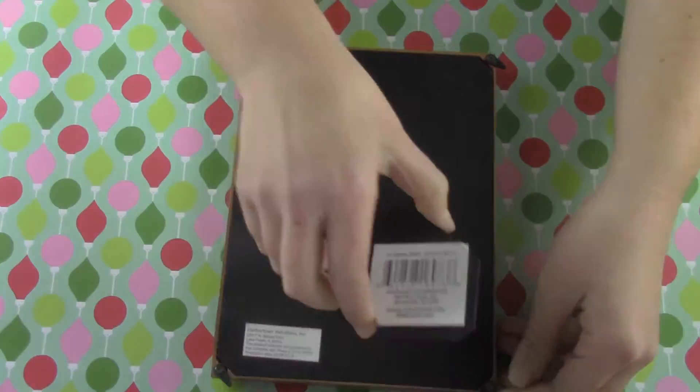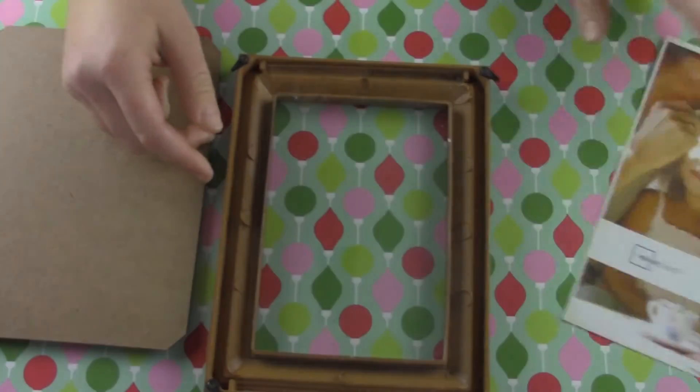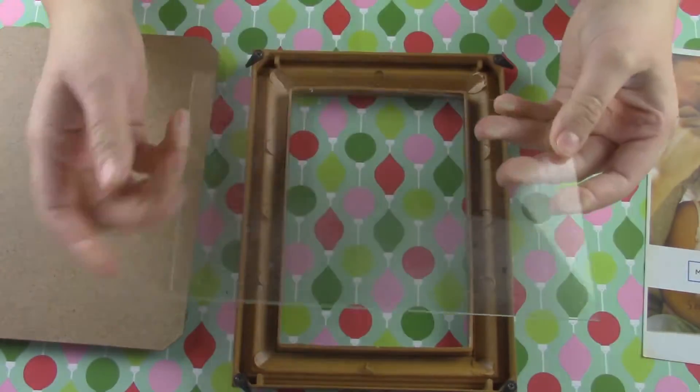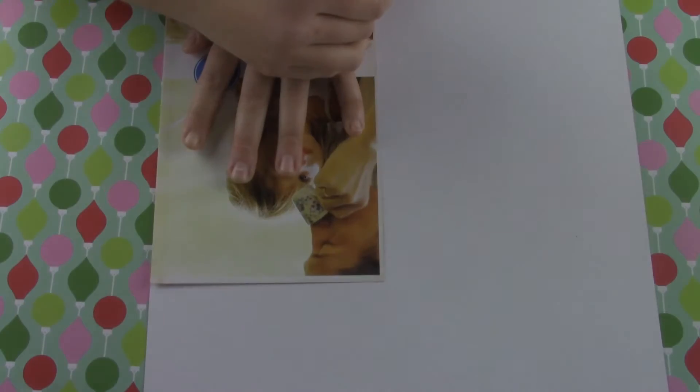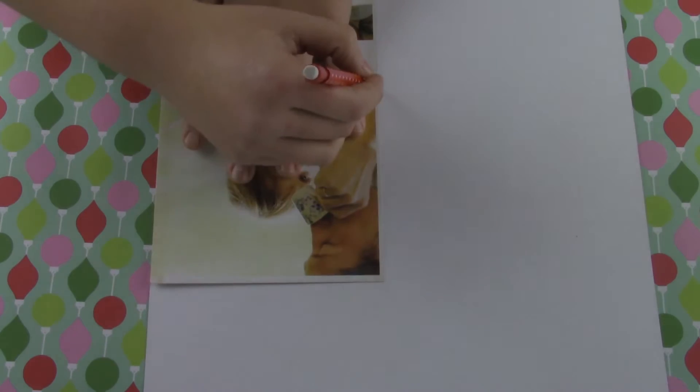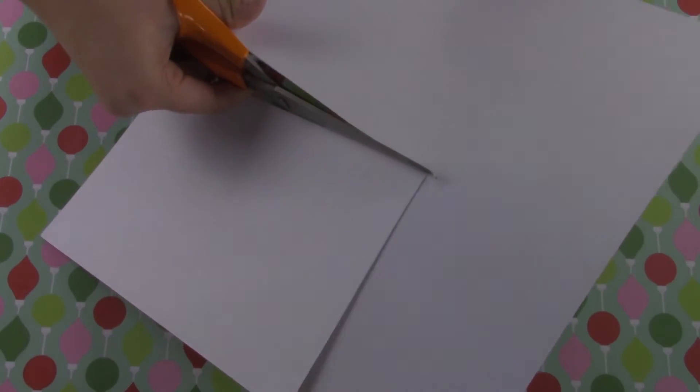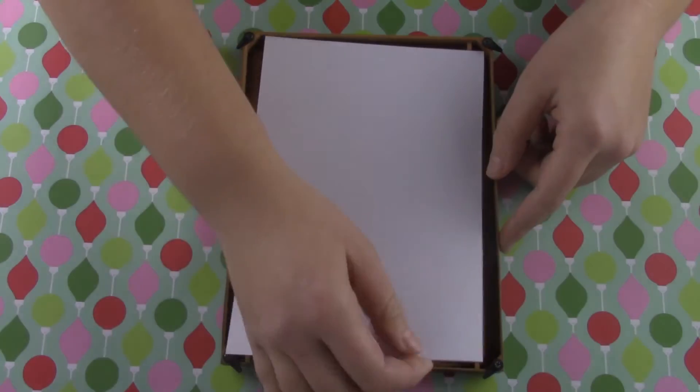First you're going to want to take out everything that is in your picture frame and put your glass to the side because we're not going to be using that. Trace around the picture that comes in the picture frame on the cardstock that you have chosen to be your background. Then cut it out.